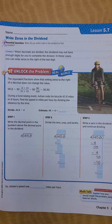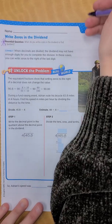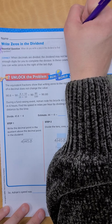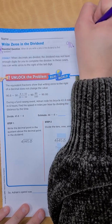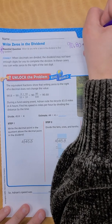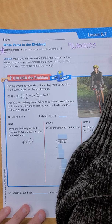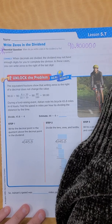When decimals are divided, the dividend may not have enough decimals for you to complete the division. In these cases, you can write zeros to the right of the last digit. For example, when I see the decimal 90 and 8 tenths, I can add a zero to the end of this — it doesn't change the value of my decimal, so I can keep adding zeros.